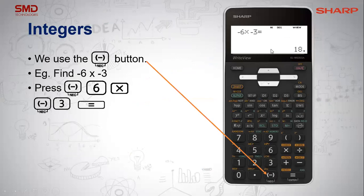An important note: the minus button is a function button, and the negative button is a value button. You cannot put two minuses together, but you can put a minus and a negative next to each other, and that works.